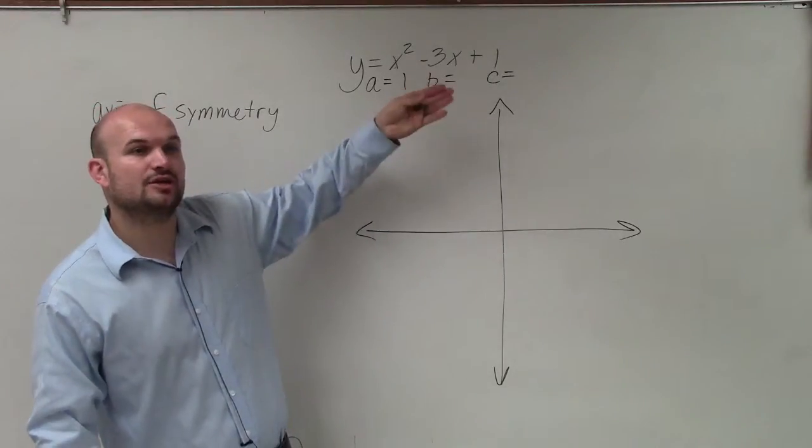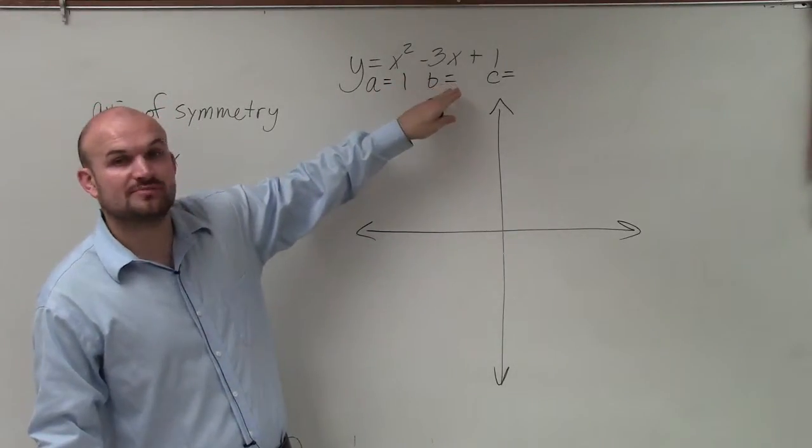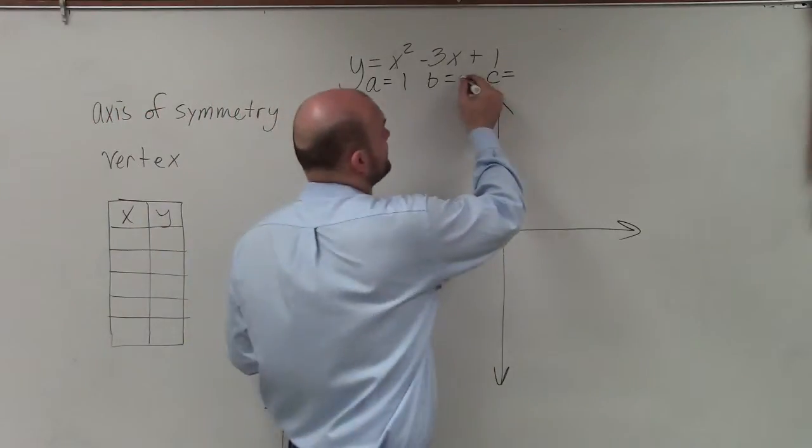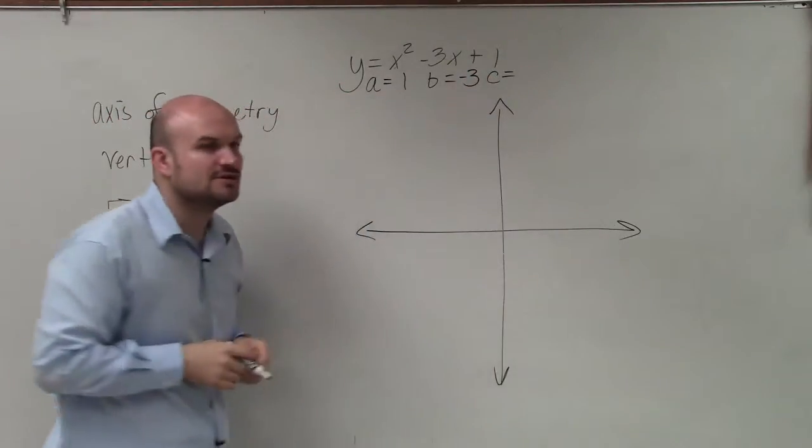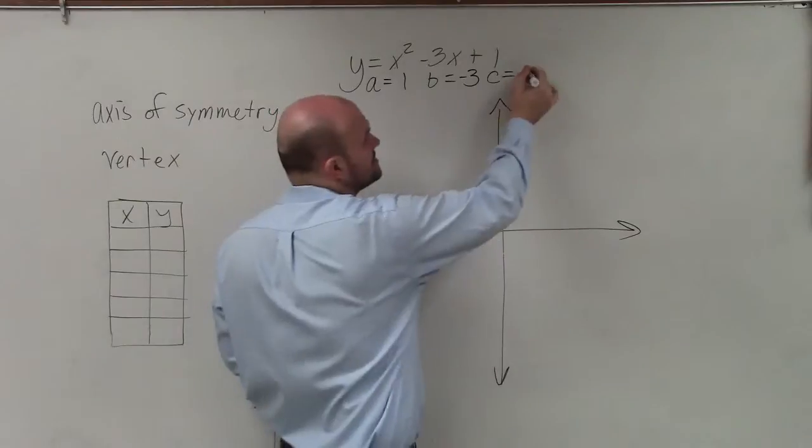B is going to be the coefficient of your linear term, which is going to be in this case negative 3. And C is going to equal our constant, which in this case is 1.